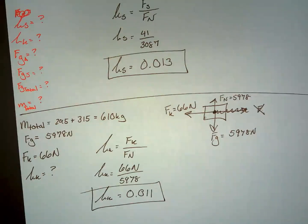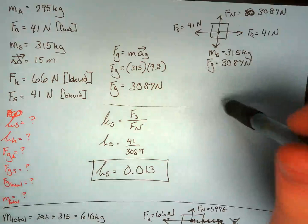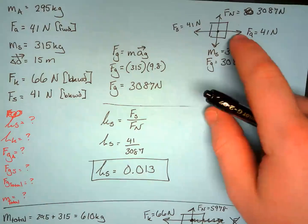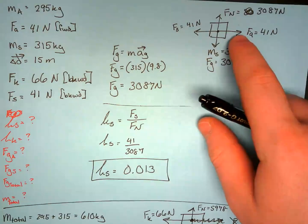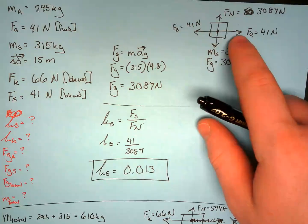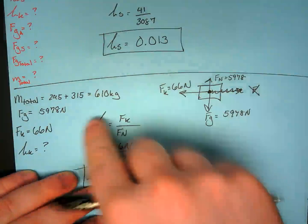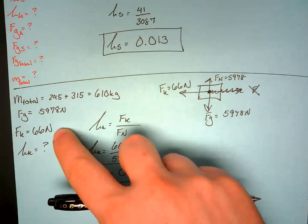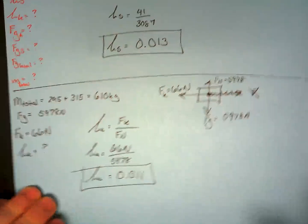Context matters here. Though we could figure out the kinetic friction before everyone jumped in, what we were given is the kinetic friction force after everyone's jumped in. So we use that. That's number two. Let's move on to number three.